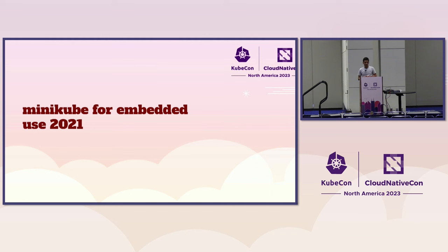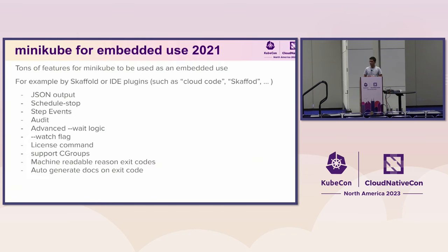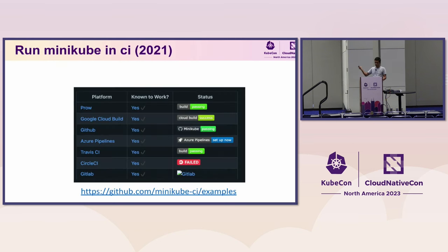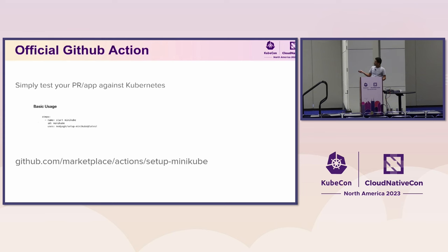Year 2021 was the year of embedded use. Minikube was used by Scaffold, Cloud Code, and other tools that wanted features good for embedded use — auditing, watch flags, schedule stop, JSON output, and so on. 2021 was also the year of Minikube CI. We made Minikube work in all the CIs we could find: Prow, Cloud Build, Travis, and so on. We also have an official GitHub Action for Minikube — you can just add that step to your GitHub Action workflow.